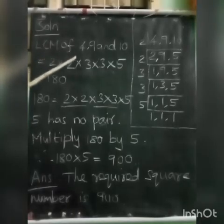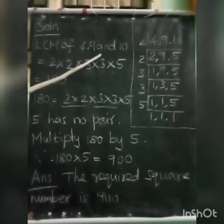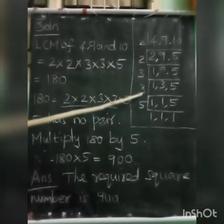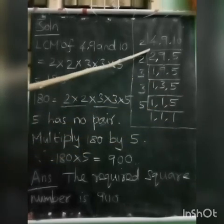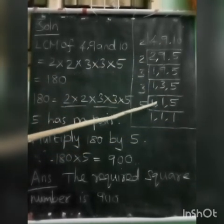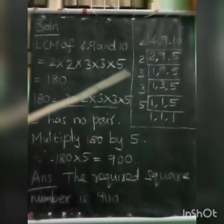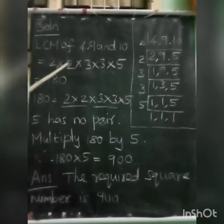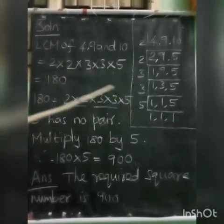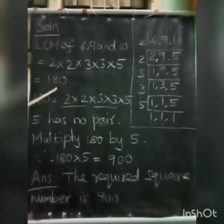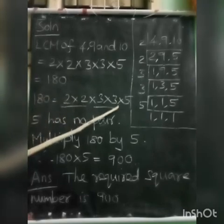Solution: here to find the LCM of these 3 numbers — 4, 9, and 10. Divide by prime factors until we reach 1, 1, 1. From this, LCM of 4, 9, and 10 is equal to the product of the prime factors: 2 into 2 into 3 into 3 into 5, which is equal to 180.